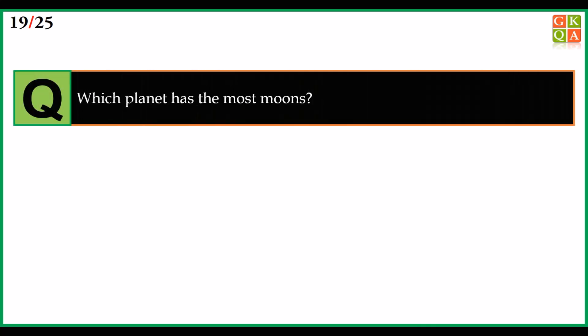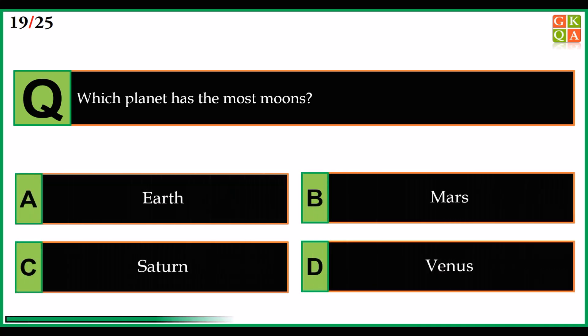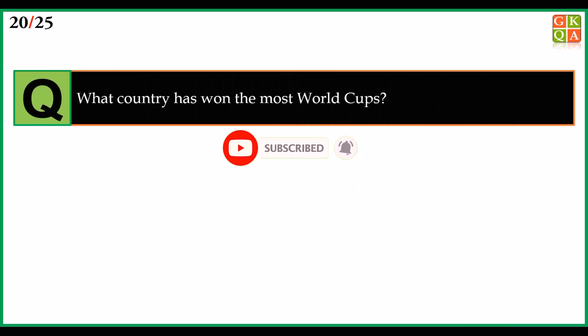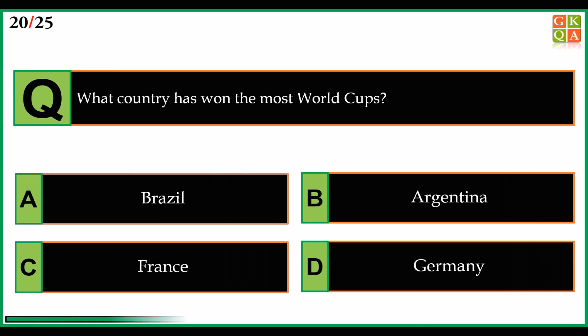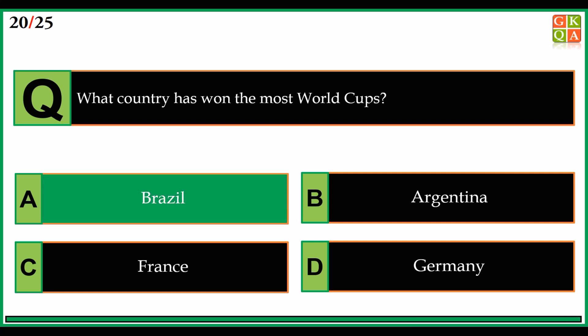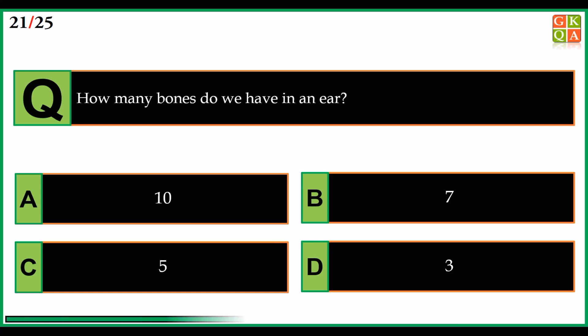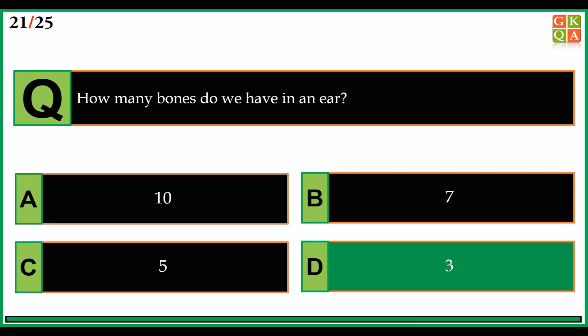Which planet has the most moons? Answer: option C, Saturn. What country has won the most World Cups? Answer: option A, Brazil. How many bones do you have in an ear? Answer: option D, three.